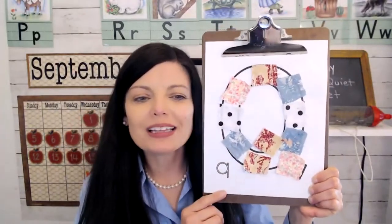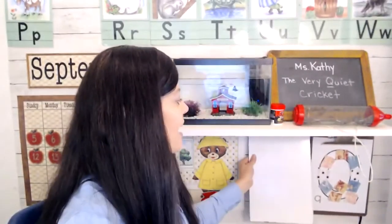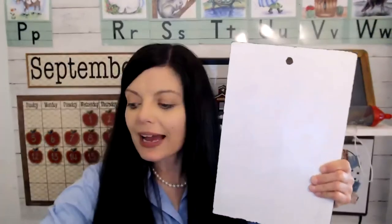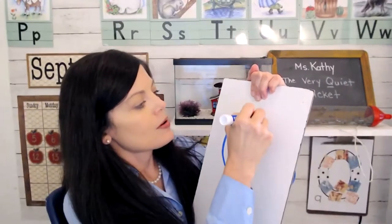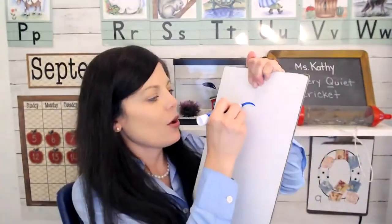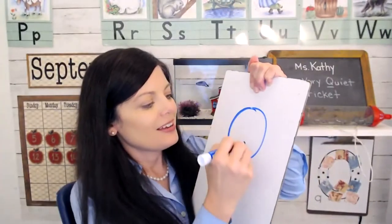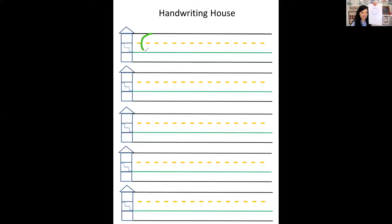Now that we know what letter Q looks like, let's do some handwriting and learn how to write the letter Q. To write the letter Q, you're going to make an O with a tail. Let's try that again — make an O and give it a little tail. Let's see what that looks like on the handwriting house. This is an uppercase Q, so it's going to be upstairs and downstairs all the way around, and then we're going to give it a tail.